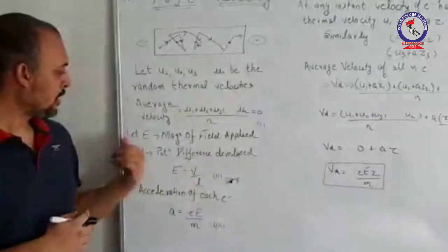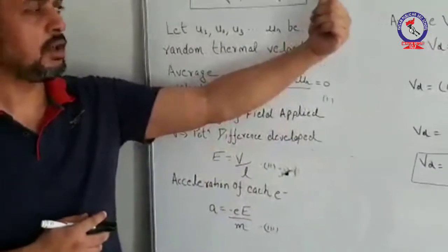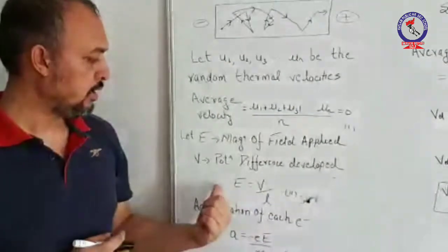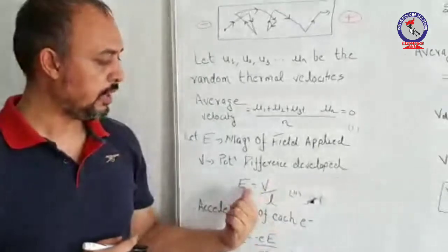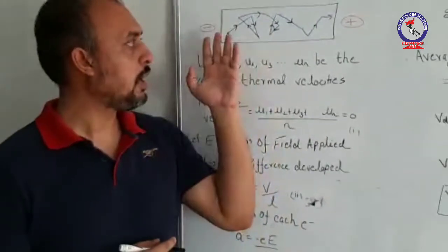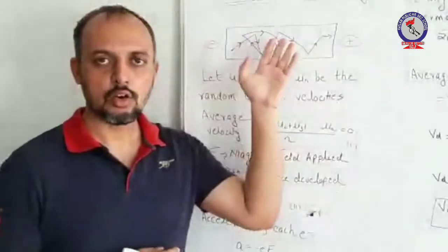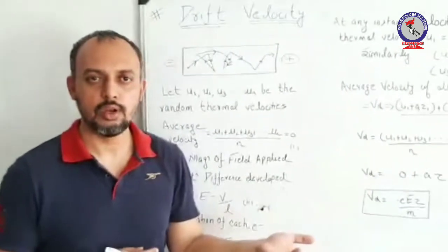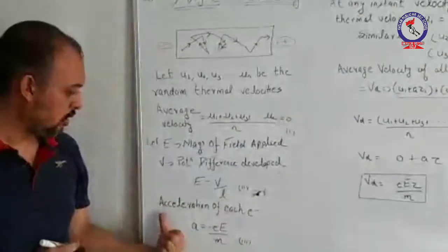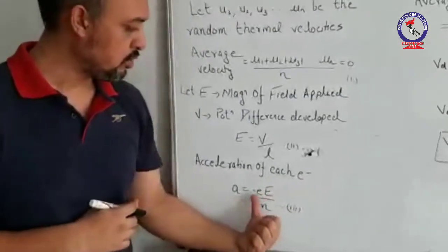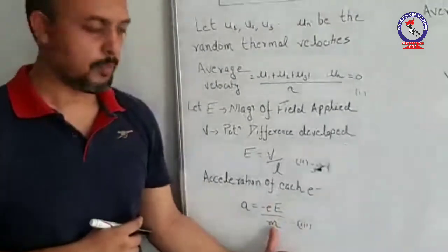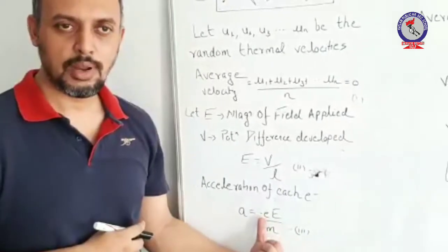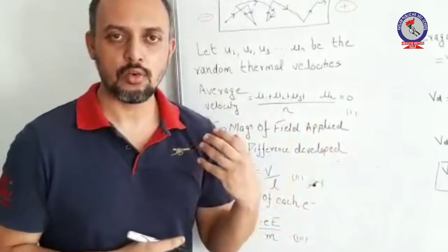Now let E be the electric field applied to the conductor. V is the potential difference developed, so E equals V over L — the field is potential per unit length. When you apply this electric field, the electrons experience a force and get aligned opposite to the direction of the field, accelerating in that direction. Therefore, the acceleration of each electron is a = −eE/m, where e is the charge on the electron. The negative sign implies the motion of electrons is opposite to the direction of the applied electric field.